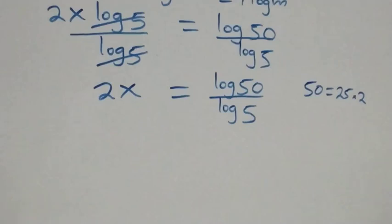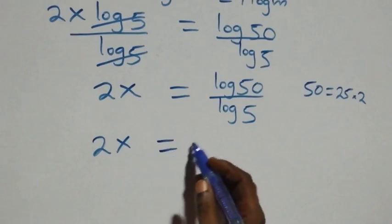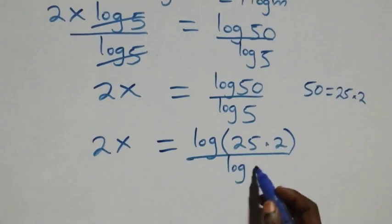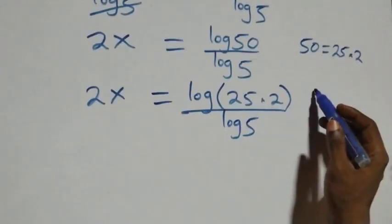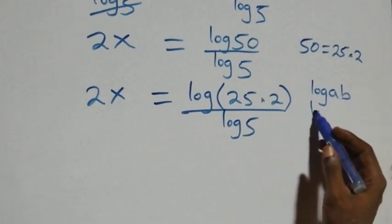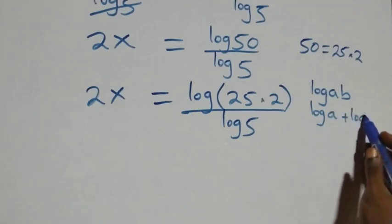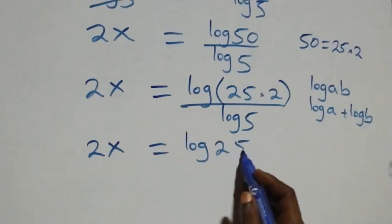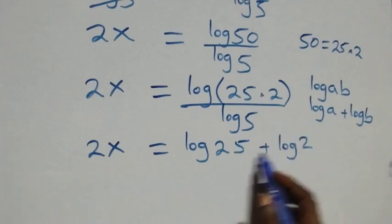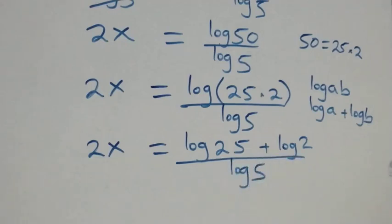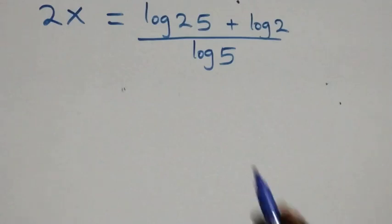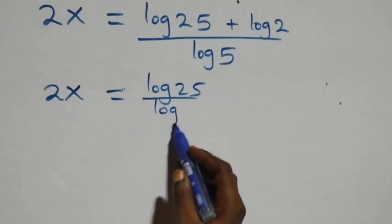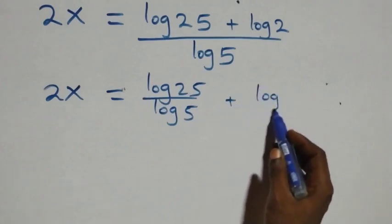So what we have becomes 2x equals log(25 times 2) over log 5. This follows from the log product rule: log(a times b) equals log a plus log b. So this becomes 2x equals log 25 plus log 2, all over log 5. Separating into two fractions: 2x equals log 25 over log 5 plus log 2 over log 5.